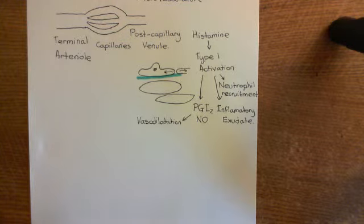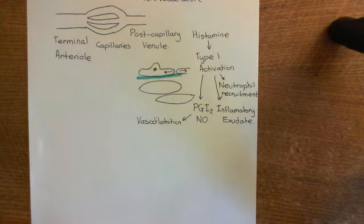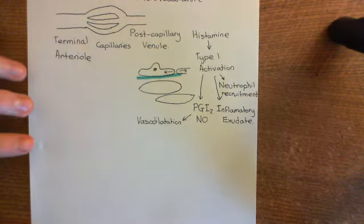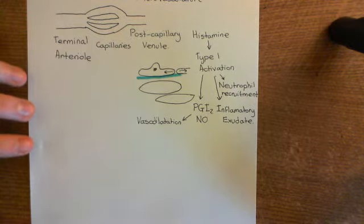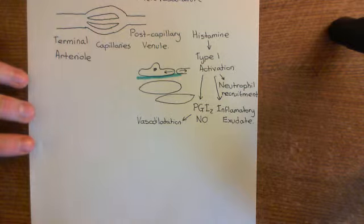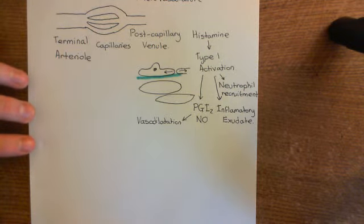You effectively build up a pus, which further leads to obstruction of the airway. Vasodilatation of terminal arterioles increases blood flow to capillaries and post-capillary venules, increasing the amount of inflammatory exudate formed and neutrophils recruited, since more fluid and neutrophils are being delivered to the site. That's the two components of the immediate phase: smooth muscle contraction and lamina propria swelling.